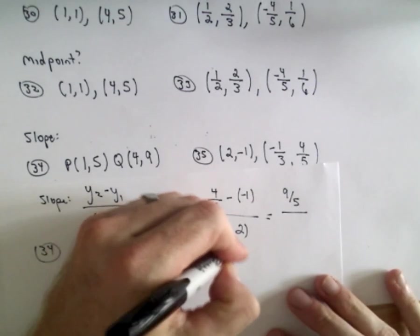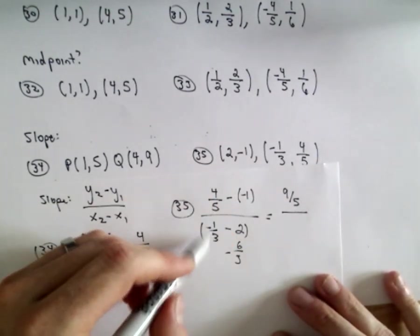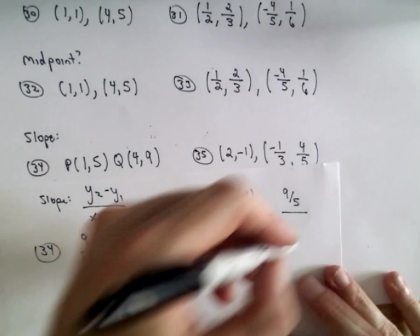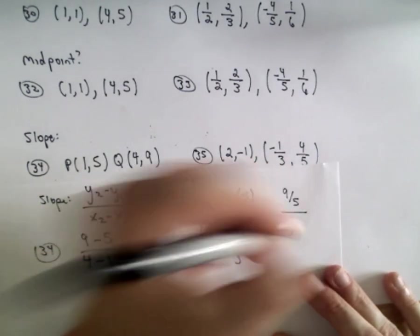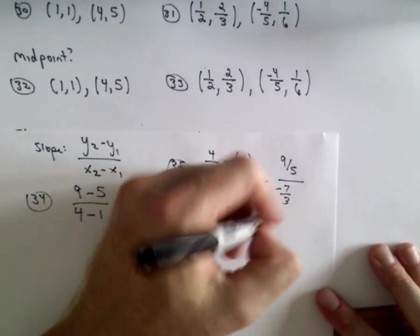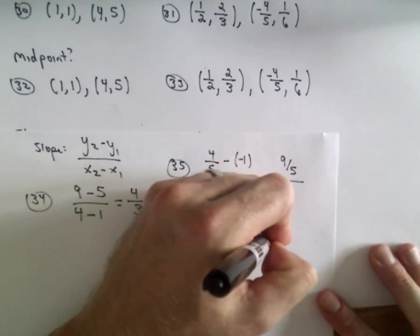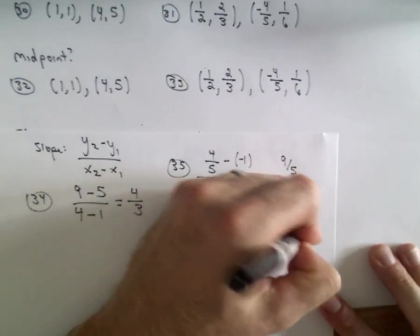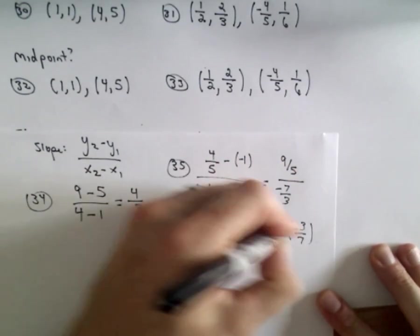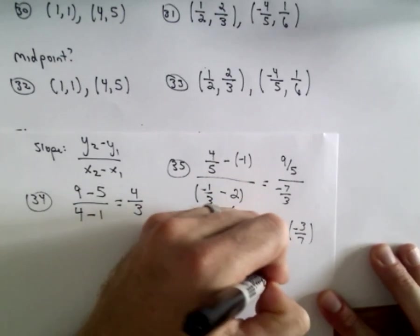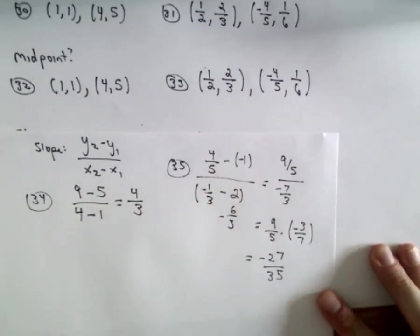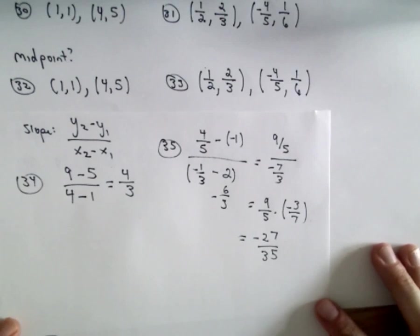So 1 third minus 6 thirds, that's going to give us negative 7 over 3. And again, if we flip and multiply, that's going to give us negative 27 over 35 as the slope of that second line.